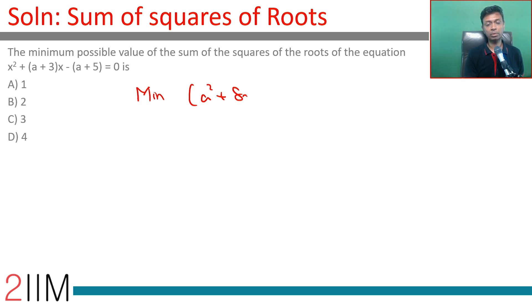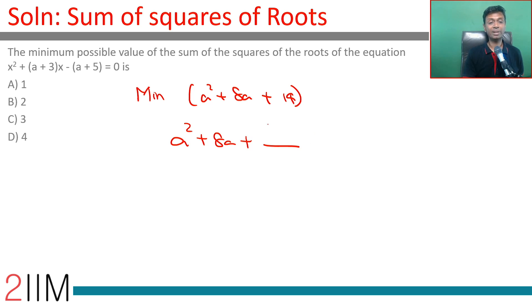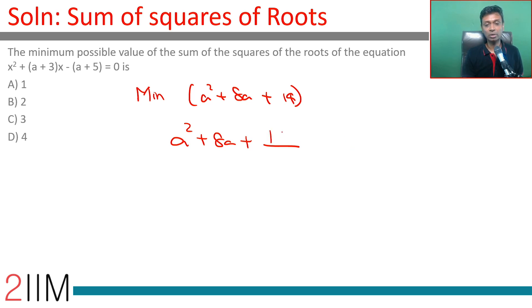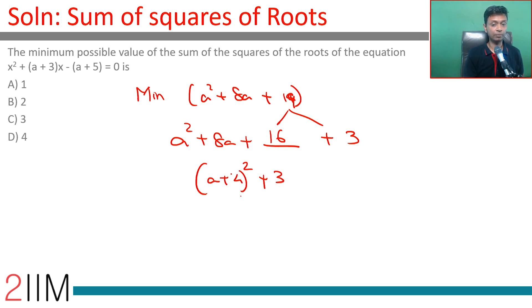Now we want to find the minimum value of a squared plus 8a plus 19 by completing the square. We write a squared plus 8a plus 16 as (a plus 4) whole squared. So 19 becomes 16 plus 3, giving (a plus 4) squared plus 3. The minimum value this can take is 3, and that is when a equals minus 4. So the minimum possible value is 3.